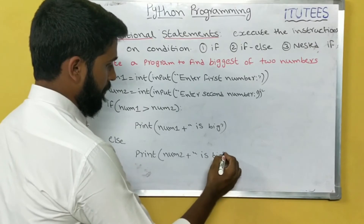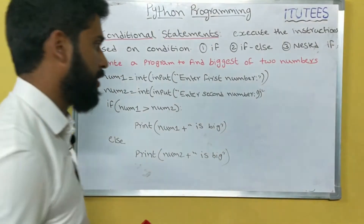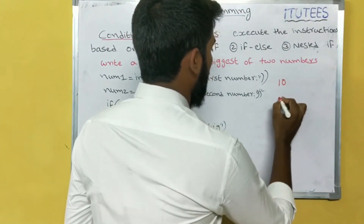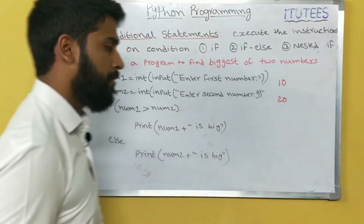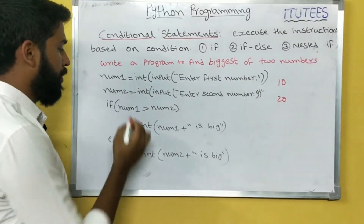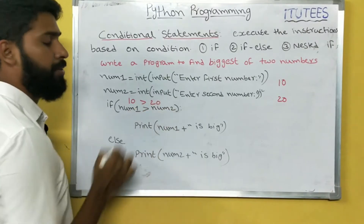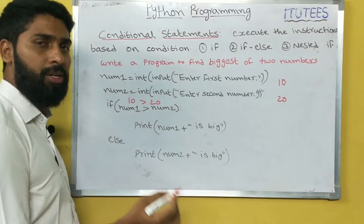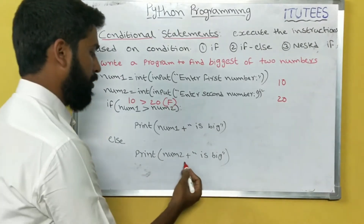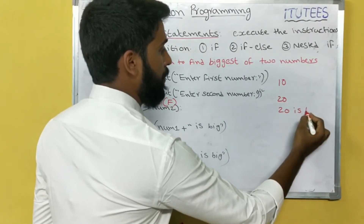Now let's discuss with one example: 10 and 20. Here number1 equals 10 and number2 equals 20. Is 10 greater than 20? False. So we execute the else branch — number2 is 20, so 20 is big.